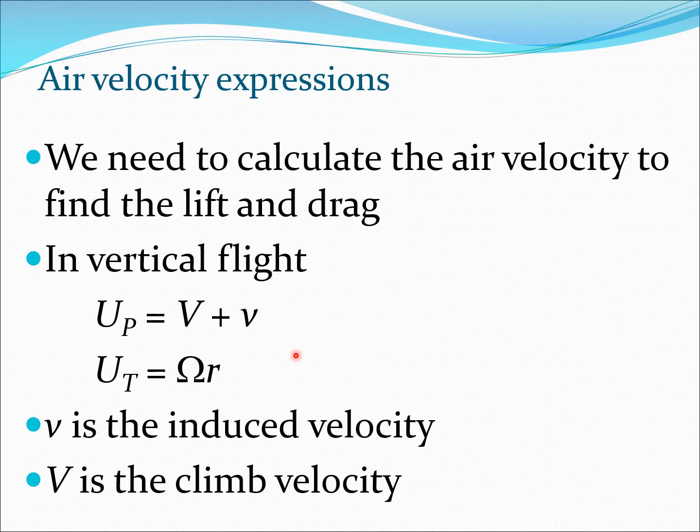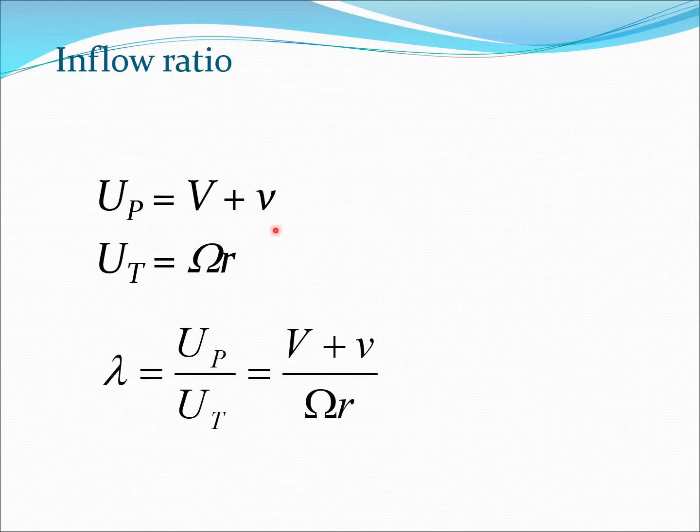We need to calculate the air velocity to find the lift and drag. In vertical flight, UP equals V plus v, where capital V is the climb velocity and small v is the induced velocity. We are taking the general case because if we set capital V equal to 0, we essentially obtain the hover case as a special condition. UT would be rotation speed into the distance r, the tangential velocity. If we divide these two, we get the expression v plus V by rotation speed into r.